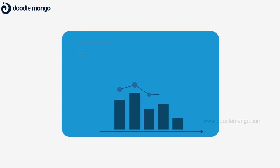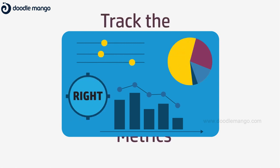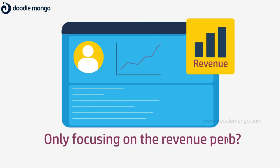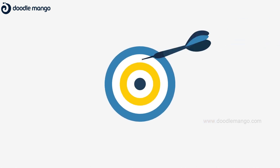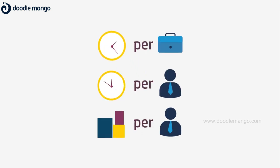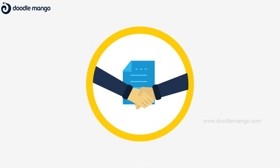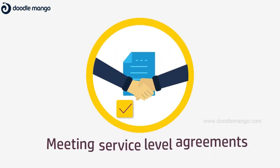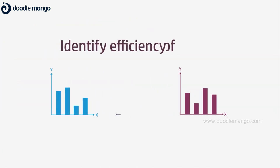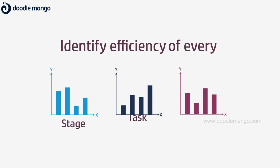Another way to identify hidden bottlenecks is to track the right metrics. Revenue per job is often the only metric tracked to identify inefficiencies, but it is not a very accurate one. Make sure that you are also looking at touch points per job, touch points per employee, volume per employee, and overall how well you are meeting your service level agreements. This can help you identify whether production is efficient at that stage, task, or step.